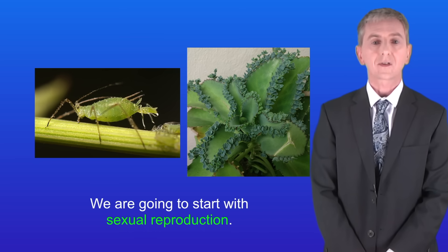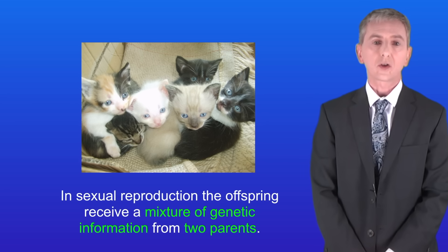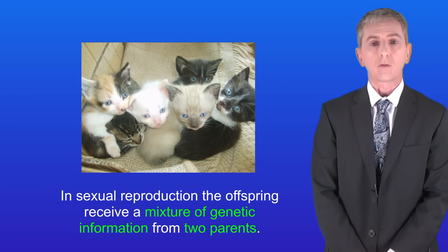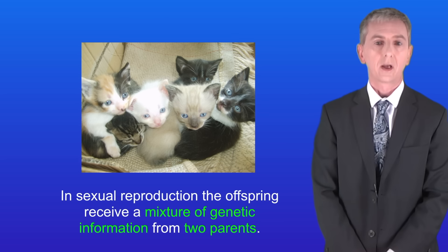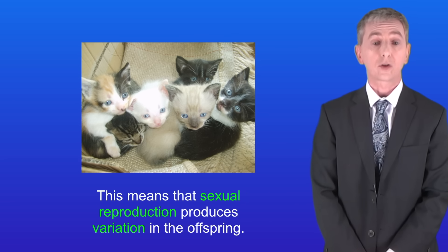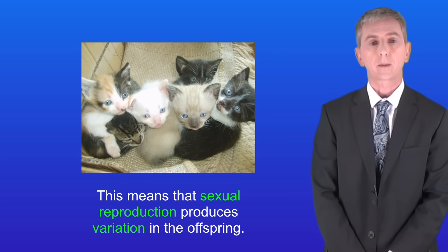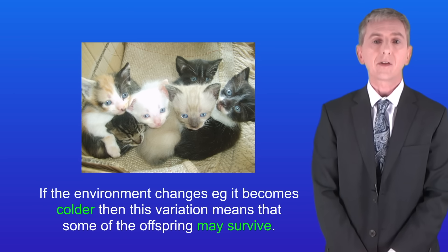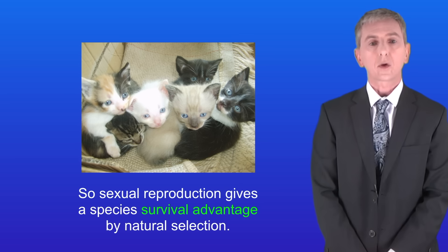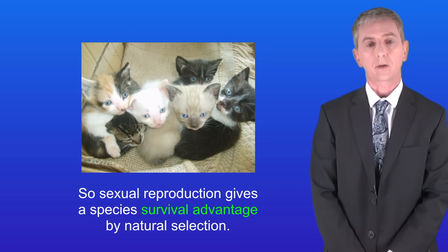We're going to start with sexual reproduction. In sexual reproduction the offspring receive a mixture of genetic information from two parents. This means that sexual reproduction produces variation in the offspring. If the environment changes, for example it becomes colder, then this variation means that some of the offspring may survive. So sexual reproduction gives a species survival advantage by natural selection.